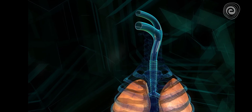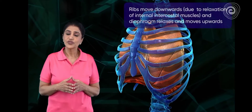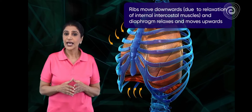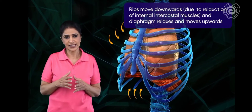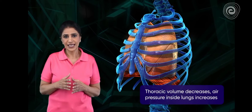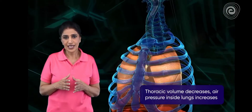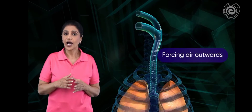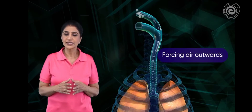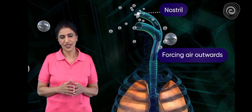After this process, the ribs move downward and simultaneously the diaphragm relaxes. Now the thoracic cavity is restored to its normal volume.